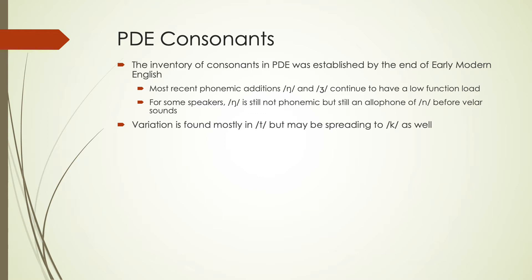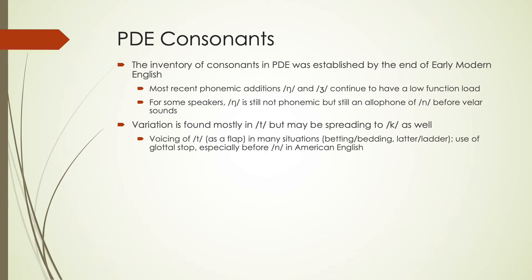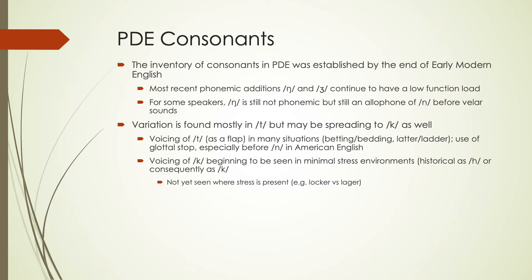There's a lot of variation found mostly in our letter T — we have many different ways of pronouncing the T sound, and some of these may be spreading to K as well. Things like the voicing of T as a flap in American English — 'bedding' versus 'betting,' or 'ladder' versus 'latter' — and using a glottal stop especially before an N in American English, as in 'kitten' or 'mitten.' These features are more common in American English than other dialects. The voicing of K is starting to appear in some minimal stress environments, but not in stressed syllables — 'locker' and 'logger' don't yet sound similar.